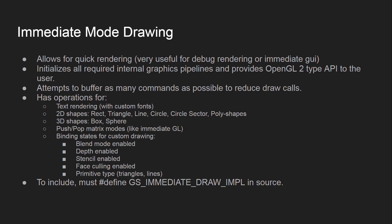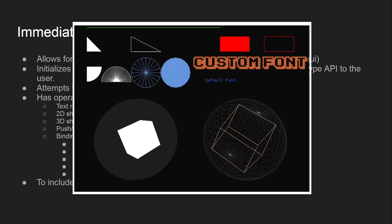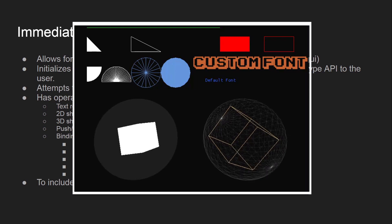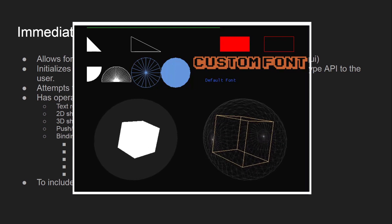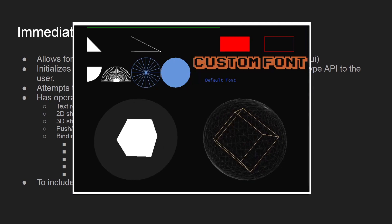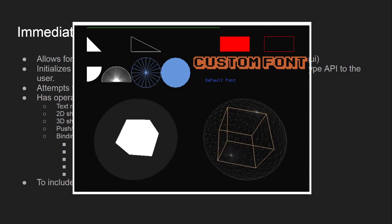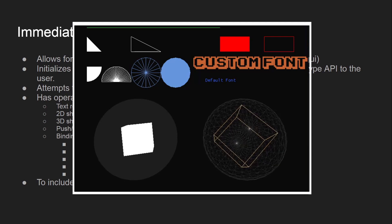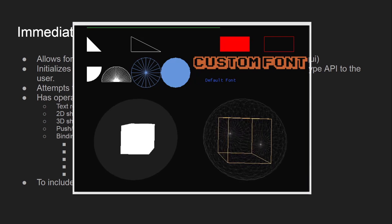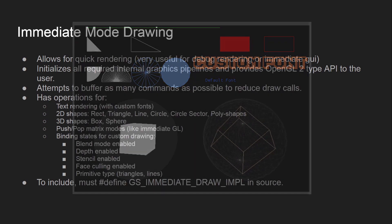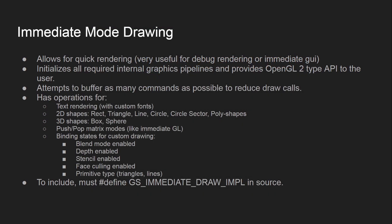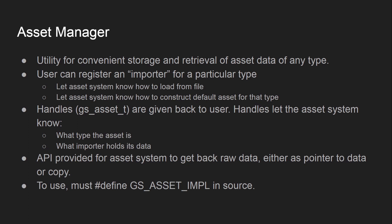The immediate mode drawing provides an OpenGL 2-type immediate mode API. It tries to buffer as many commands as possible to batch things up and reduce draw calls. Provided operations include simple text rendering with or without custom fonts, 2D shapes with or without textures — rectangles, triangles, lines, circles, circle sectors, and poly shapes — 3D shapes like boxes and spheres, the ability to push and pop matrix modes, and binding various states for custom drawing such as blending, depth, stencil, face culling, and the primitive type.